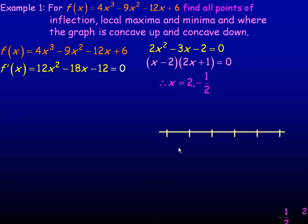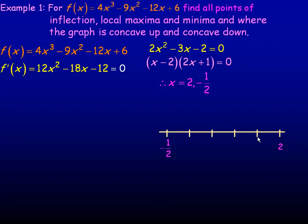We'll put negative 1 half and 2 on our number line. Notice the scale here is 1 half — so that's negative 1 half, 0, 1 half, 1, 1.5, and 2. Those are our critical points. We'll use the second derivative test to figure out which is the local minimum and which is the local maximum, so we need the second derivative now.